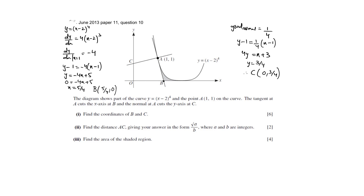In the second part you are being asked to find the distance AC. The coordinates of A are (1, 1) and C are (0, 3/4). Using the distance formula: square root of (x2 minus x1) squared plus (y2 minus y1) squared, when you work it out you get square root of 17 over 4. That's the distance AC.